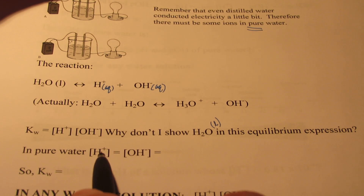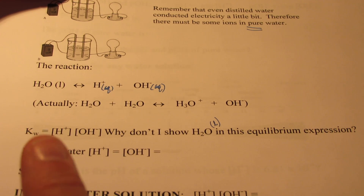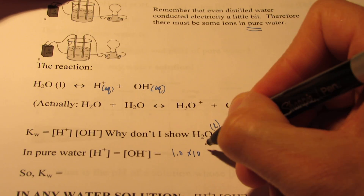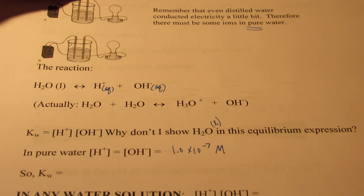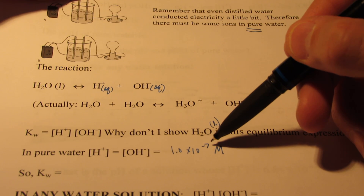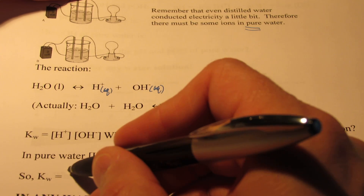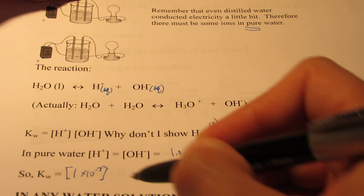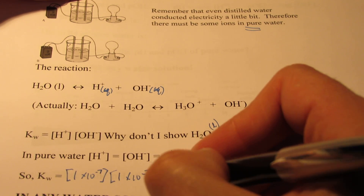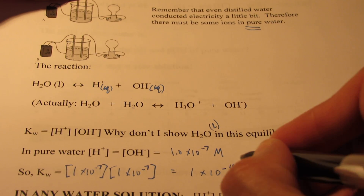Either version is fine — I prefer H⁺, it's a little easier to write. The concentration of these two things in pure water is very low: 1.0 × 10⁻⁷ moles per liter. That's why just a little bit of electricity was conducted in that demo, because very few ions were present. So the equilibrium constant for water, Kw, is (1 × 10⁻⁷)(1 × 10⁻⁷), which equals 1 × 10⁻¹⁴.